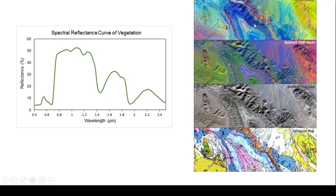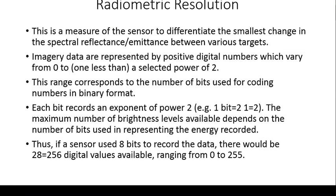Radiometric resolution is the measure of a sensor's ability to differentiate the smallest change in spectral reflectance or emittance between various targets. As spatial resolution is dependent on pixels and spectral resolution is dependent on the number of bands, radiometric resolution is dependent on a digital number — starting from 0 with a power of 2. As it increases, the darkness or brightness of the image is also defined. Radiometric resolution is mostly used for panchromatic sensor images, which are black and white.